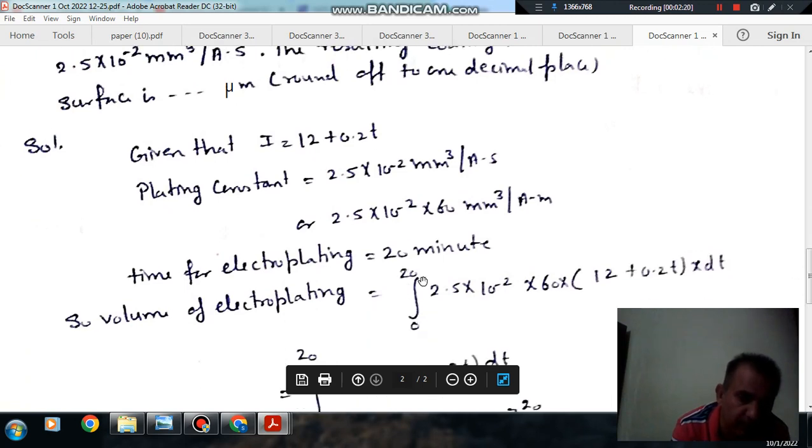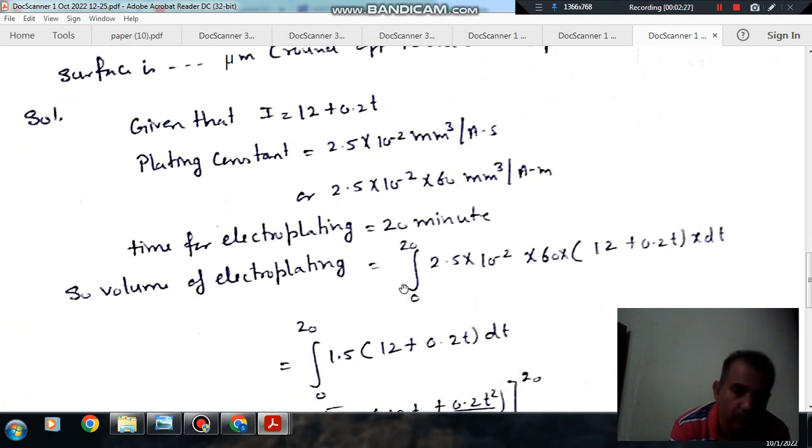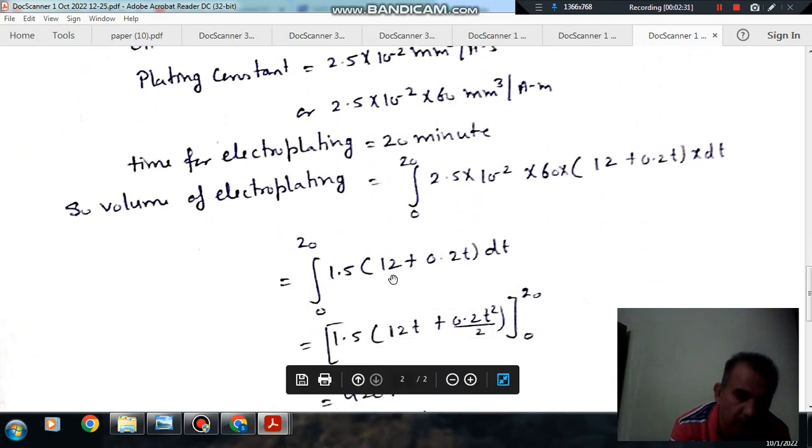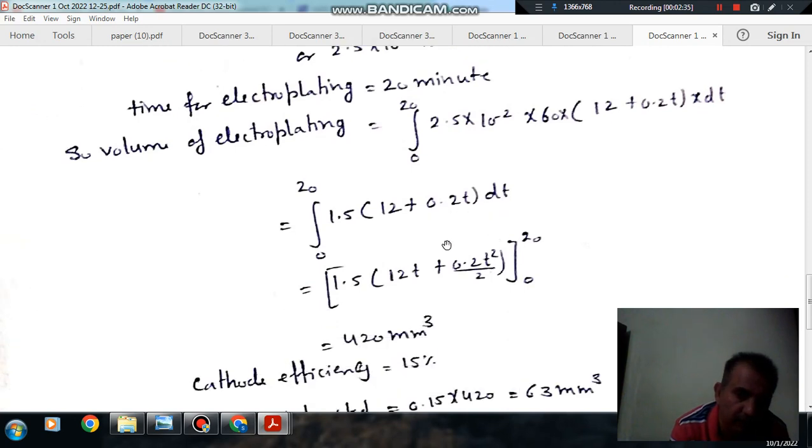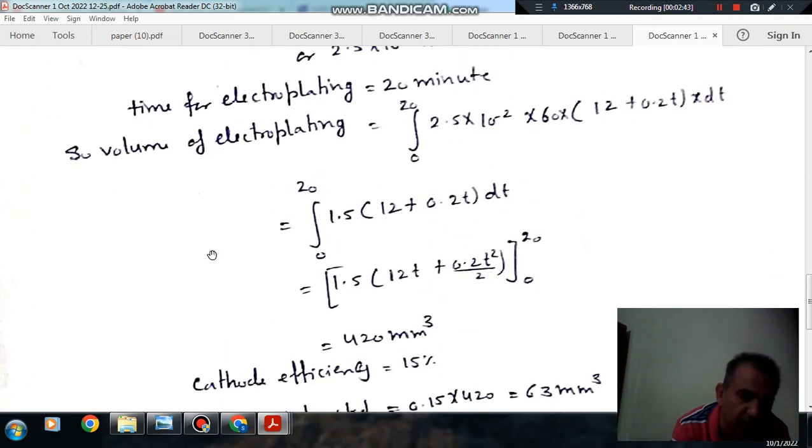And if we integrate within the limit of 0 to 20, then it will be the total volume of electroplating in 20 minutes. Now if we solve it, it will be 2.5 bracket 12t plus 0.2t squared integrated. If we integrate it and put the limit, this comes out to 420 mm cubed. So this is your ideal volume of electroplating.